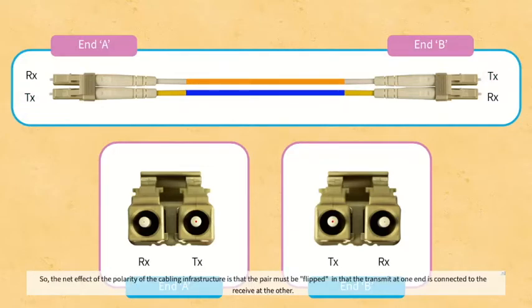So the net effect of the polarity of the cabling infrastructure is that the pair must be flipped, in that the transmit at one end is connected to the receive at the other.